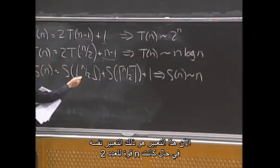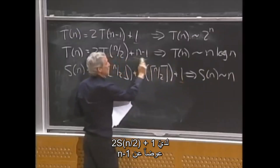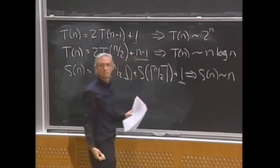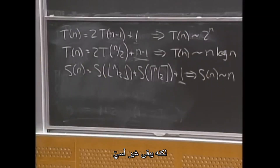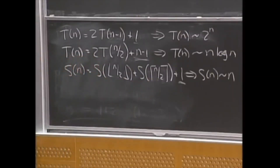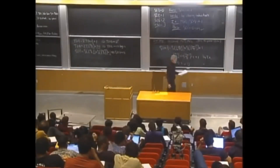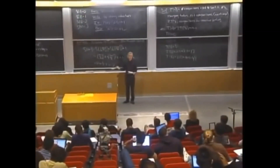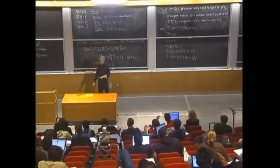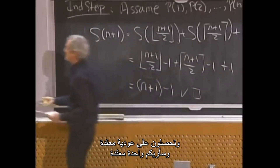So S(n) ~ n — it's linear. Going from n−1 to just 1 in the additive term eliminated the log factor. But it's still not exponential, because we're cutting the argument roughly in half each time. All the recurrences so far have been simple enough that guess-and-verify or plug-and-chug works. But sometimes you get nasty recurrences.